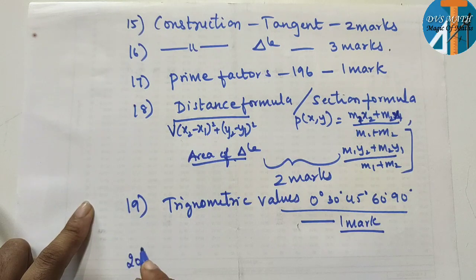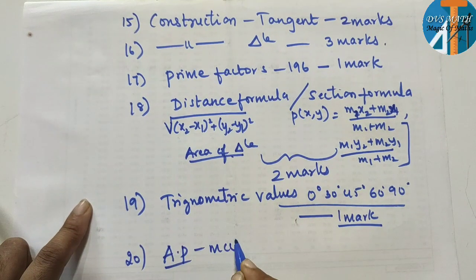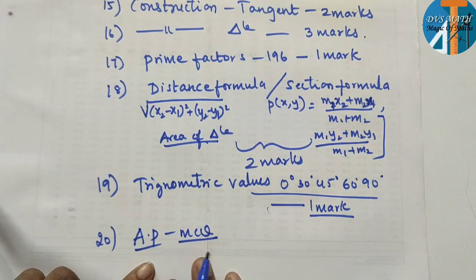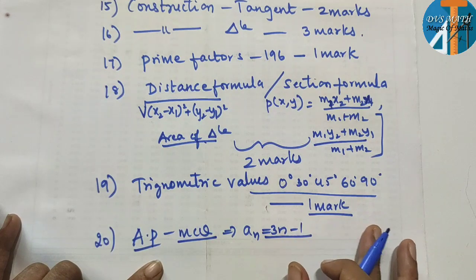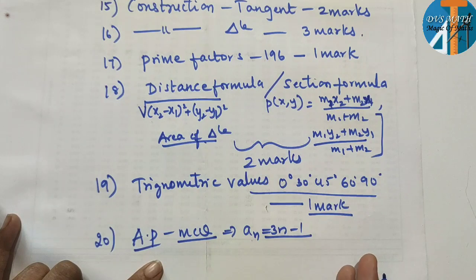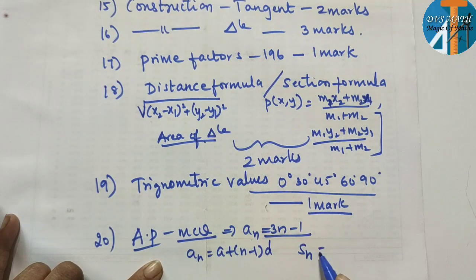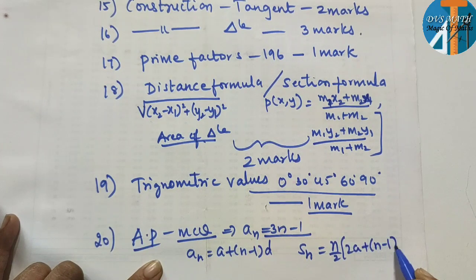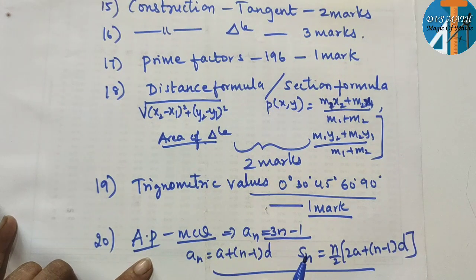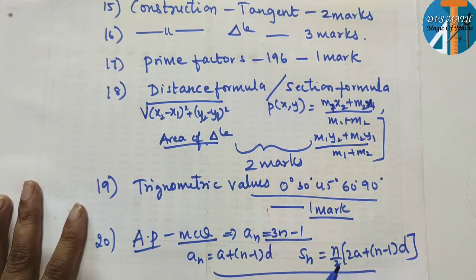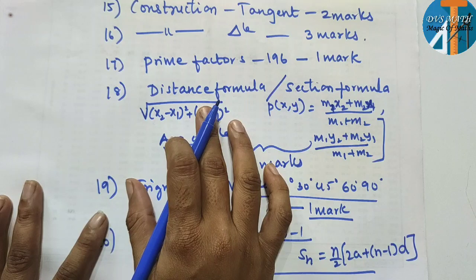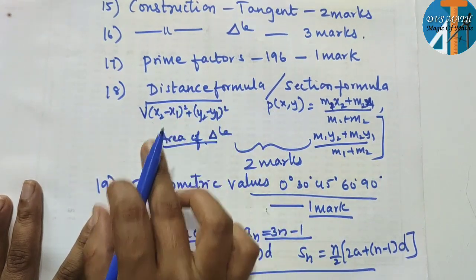Last question: AP (Arithmetic Progression). One MCQ will definitely come from AP. For example, given 3n − 1, find the nth term, the first term, third term, or fifth term. Or a series of numbers is given — find the common difference or the nth term. Remember two formulas: aₙ = a + (n−1)d, and Sₙ = (n/2)[2a + (n−1)d]. Practice these two formulas and you can attempt at least one AP question.